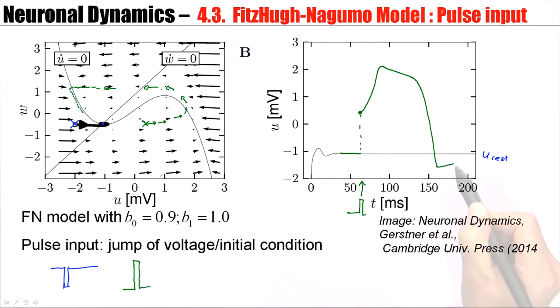And so, very slowly, it will go back to the resting potential. So this part will be slow. This part will be fast. Thus, a pulse input causes a jump of the voltage, leads to a new initial condition, either the blue one or the green one. From this new initial condition, we just follow the flow of the arrows. And this gives the voltage trajectory that we are expected to find.